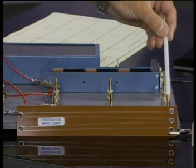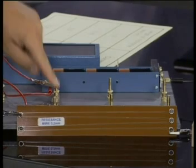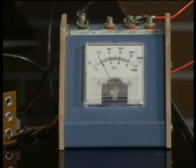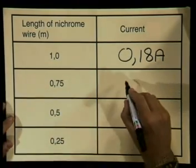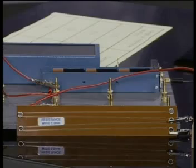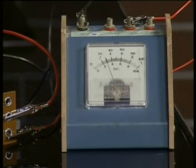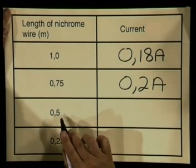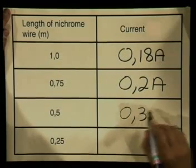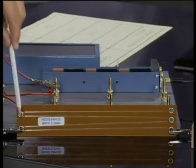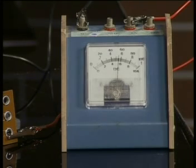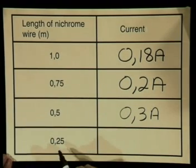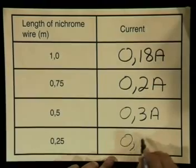I have now moved the connecting lead from the one meter position to the 0.75 meter position. I close the switch and we can see that the ammeter is reading 0.2 amperes. So for our nichrome wire at 0.75 meters, our current read 0.2 amperes. I've now moved the lead to the 0.5 meter position. I close the switch and the ammeter is now reading 0.3 amperes. For my last reading, I've moved it to the 0.25 meter position. I close the switch and I can see my ammeter is reading approximately 0.55 amperes.